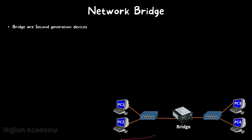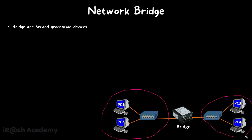In this picture we can consider one side as LAN1 and the other as LAN2. LAN1 and LAN2 can connect together as a single network with the help of a network bridge.